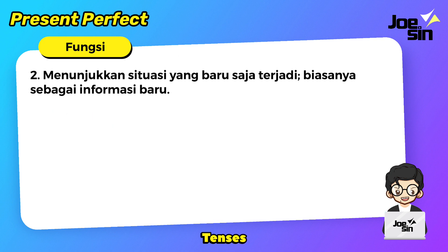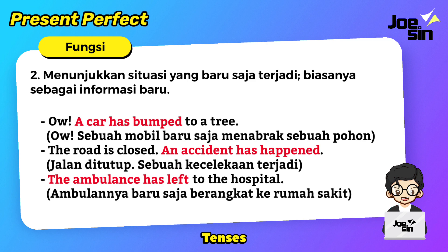Fungsi yang kedua adalah menunjukkan situasi yang baru saja terjadi. Ini biasanya bentuknya sebagai informasi baru. Contohnya: a car has bumped to a tree — sebuah mobil baru saja menabrak sebuah pohon. Jadi kita gunakan present perfect tense, has bumped. Kata bumped ditambahkan -ed sebagai bentuk kata kerja ketiga. Contoh kedua: the road is closed — an accident has happened — sebuah kecelakaan baru saja terjadi. Contoh ketiga: the ambulance has left to the hospital — ambulannya baru saja berangkat ke rumah sakit. Jadi ini bentuknya informasi baru.